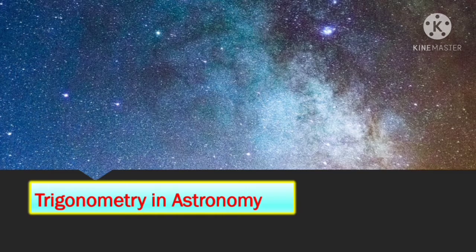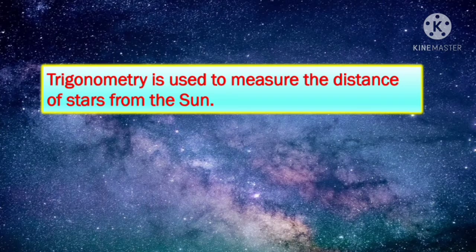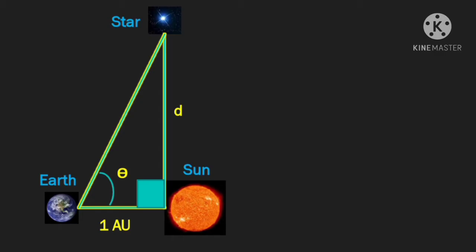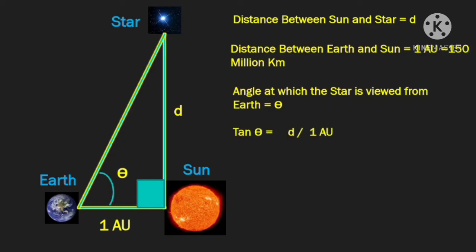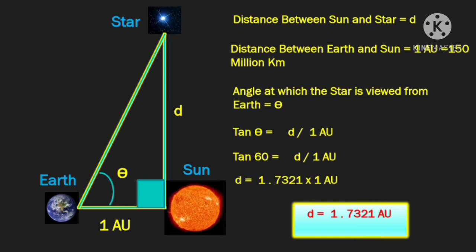Trigonometry and astronomy are inseparable, and trigonometry is widely used to measure the distance of stars from the sun. Suppose you want to find the distance between the sun and a particular star — let's call that distance d. We already know the distance between the sun and earth to be one astronomical unit, approximately 150 million kilometers. When those two distances are perpendicular to each other, you observe the star and note the angle of inclination — let that be theta, say 60 degrees. You're getting a right angle triangle, so tan theta is d upon one astronomical unit. Substituting the values, the distance between the sun and the star is 1.7321 astronomical units.